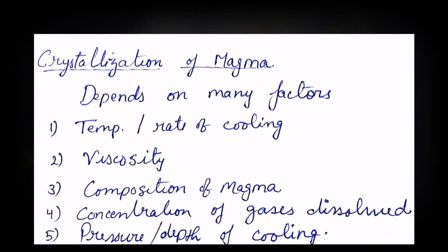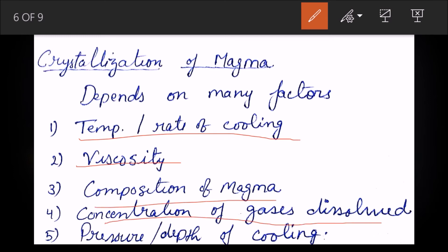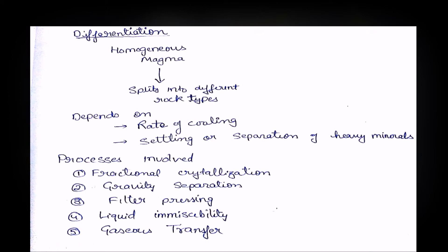Moving on to crystallization of magma — it depends on temperature, or the rate at which it is cooling. If cooling is very fast, crystallization will be quick. It also depends on viscosity — how fast the magma is flowing. If viscosity is high, the discontinuous reaction series will be more dominant because the precipitate stays within the solution. Other factors include composition, concentration of dissolved gases, and pressure.